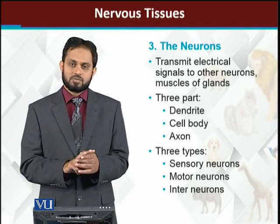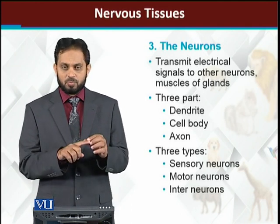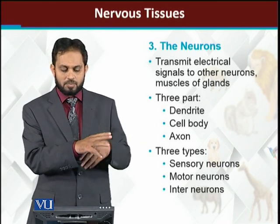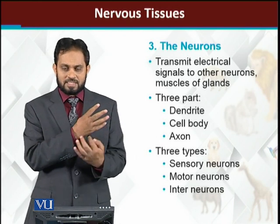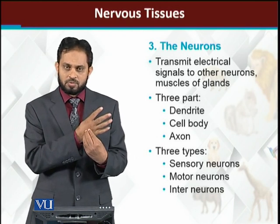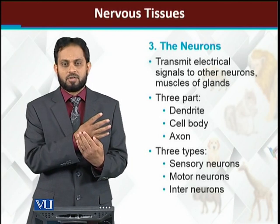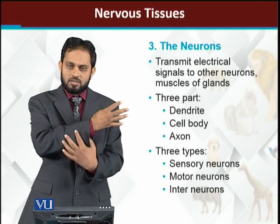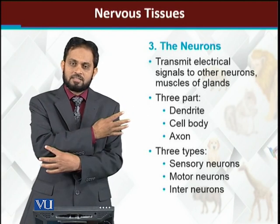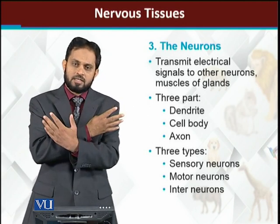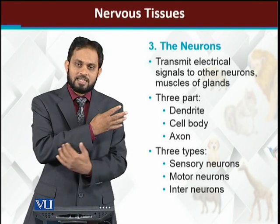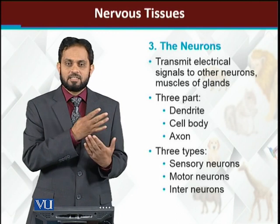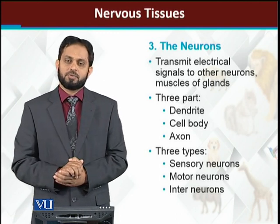Neurons basically have three parts. The first portion of the neuron is that which receives the message — it is thread-like, and we call it the dendrite. Then there is the cell body of the neuron. After that, the neuron has a long thread-like or fiber-like structure at the back which carries the message forward to the next neuron — and this is called the axon. So dendrite, cell body, and axon are the three parts of the neuron.